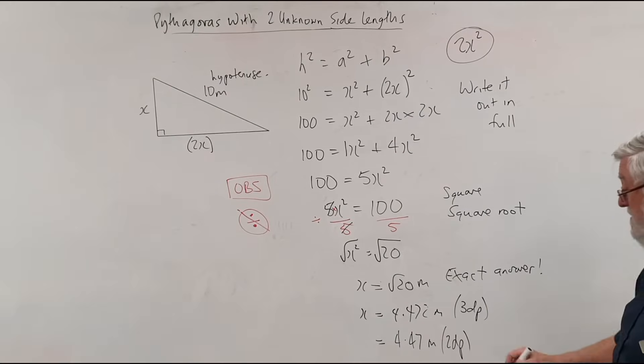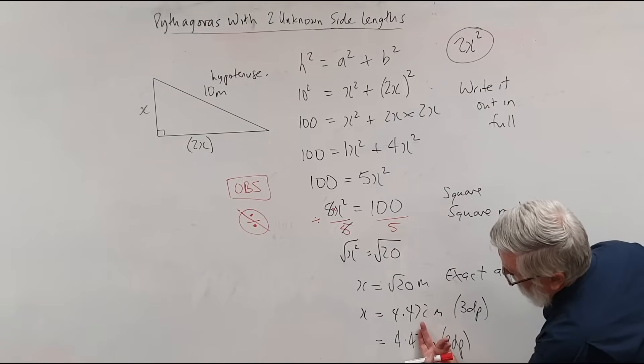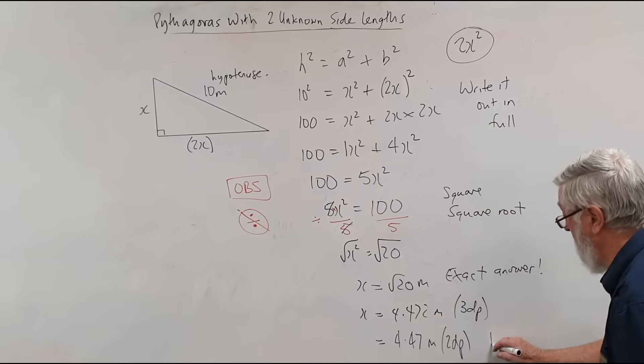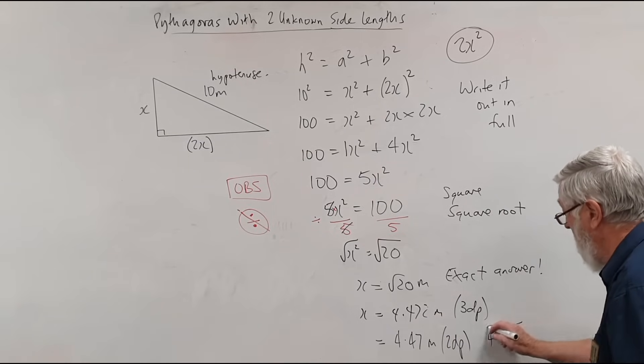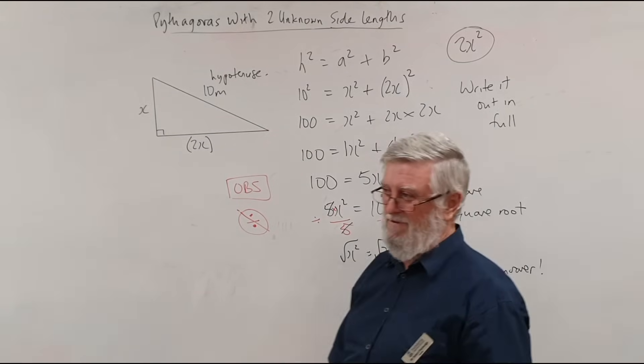Of course, if I wanted to write it to one decimal place, that would become closer to four or five, that would become 4.5 metres. And probably in most cases, that's a bit too rough.